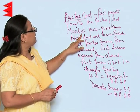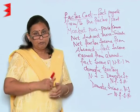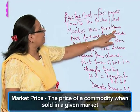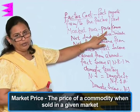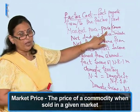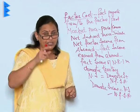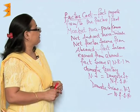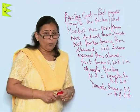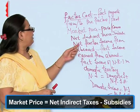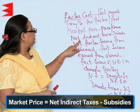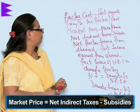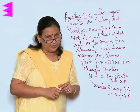Market price is the price at which that same commodity is sold in the market. This market price can be expressed as factor cost plus net indirect taxes minus subsidy.